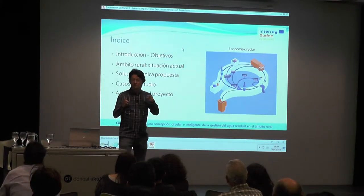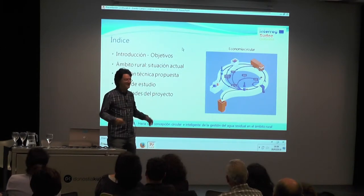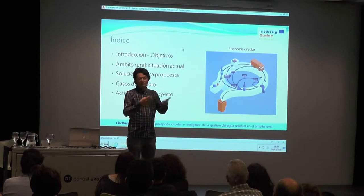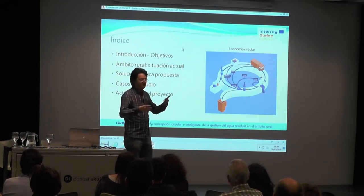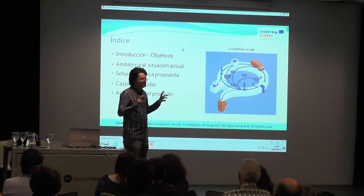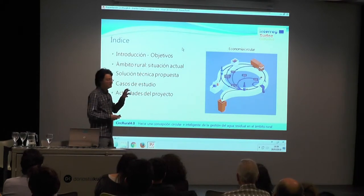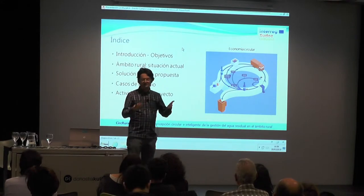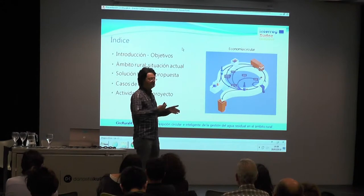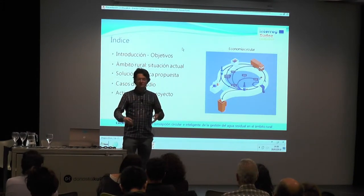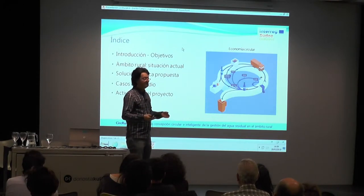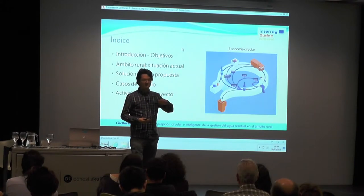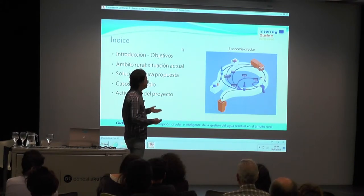Industry 4.0 is another key term. The 4.0 comes from the fourth industrial revolution. Industry 4.0 basically consists of how to exploit information technologies — the Internet of Things, artificial intelligence, big data, augmented reality, and all those types of technologies — and how to use them in industry to make industrial processes much more efficient: for example, to predict when a machine might deteriorate, or to optimize maintenance processes.